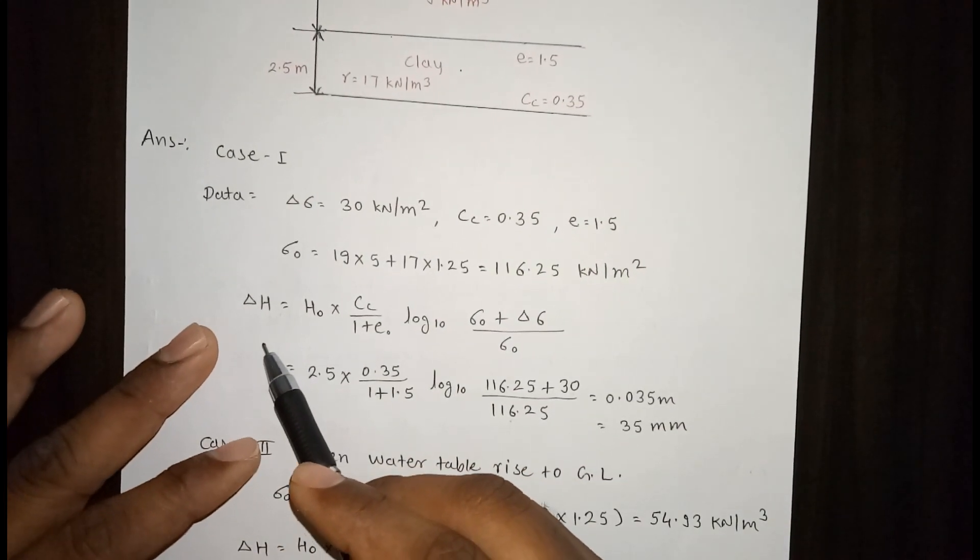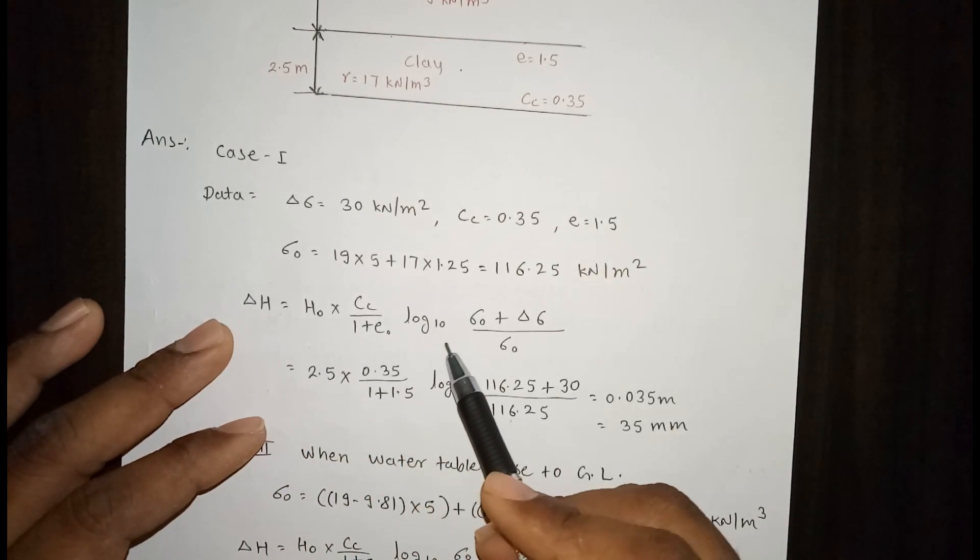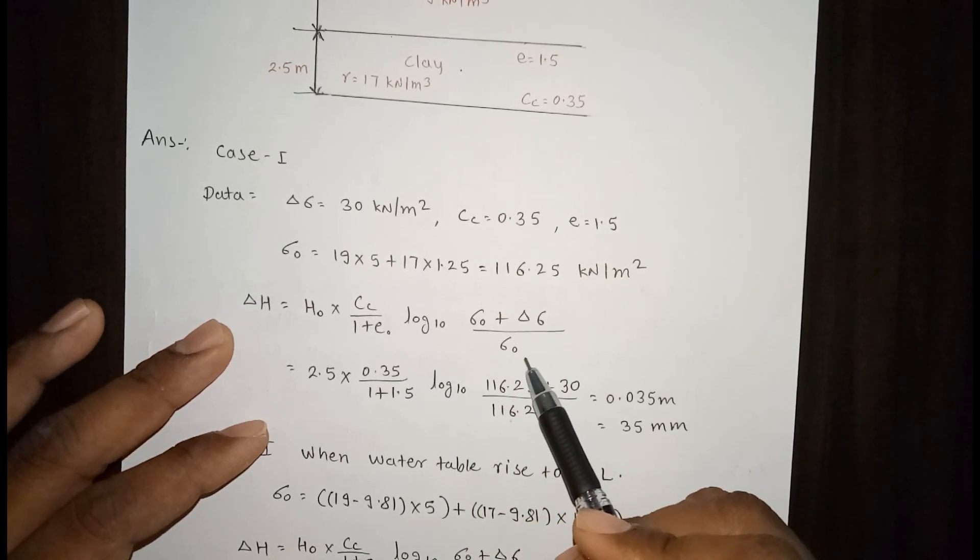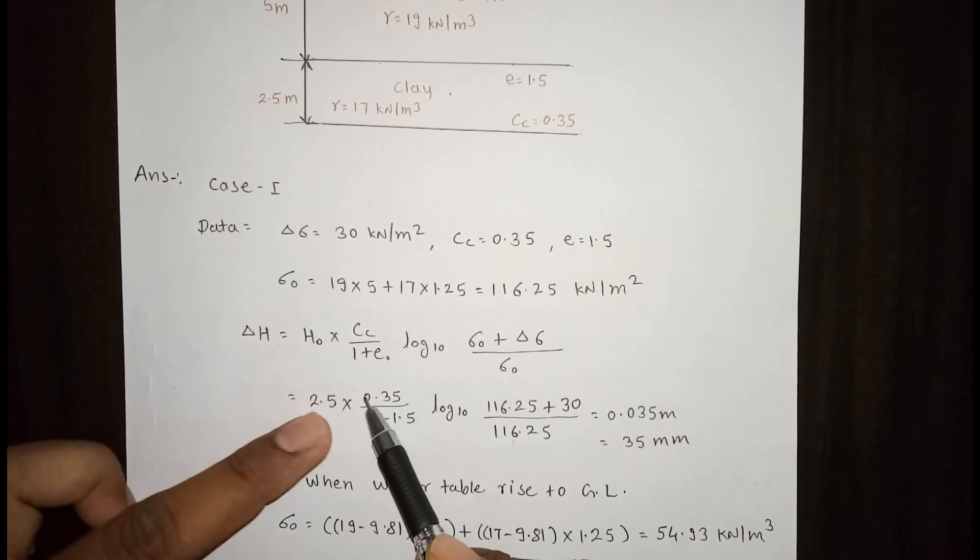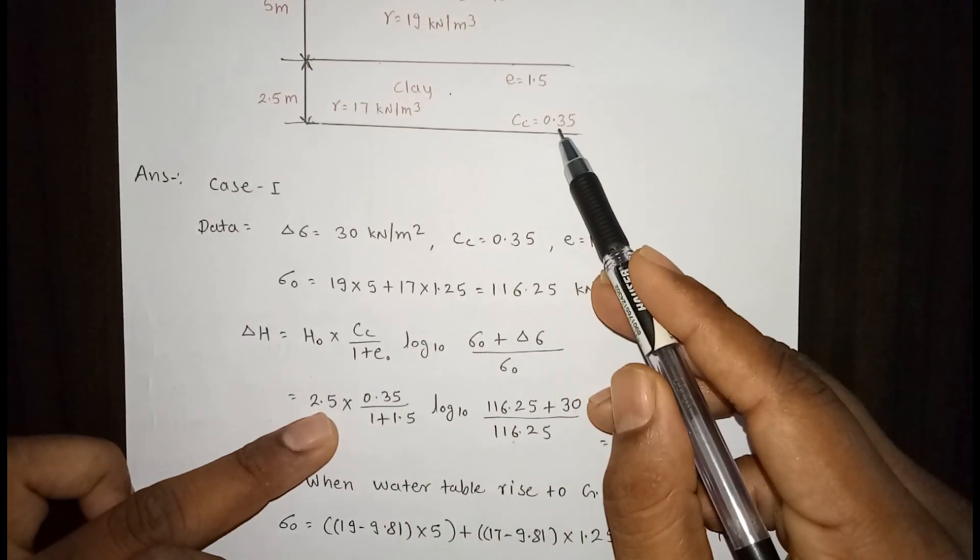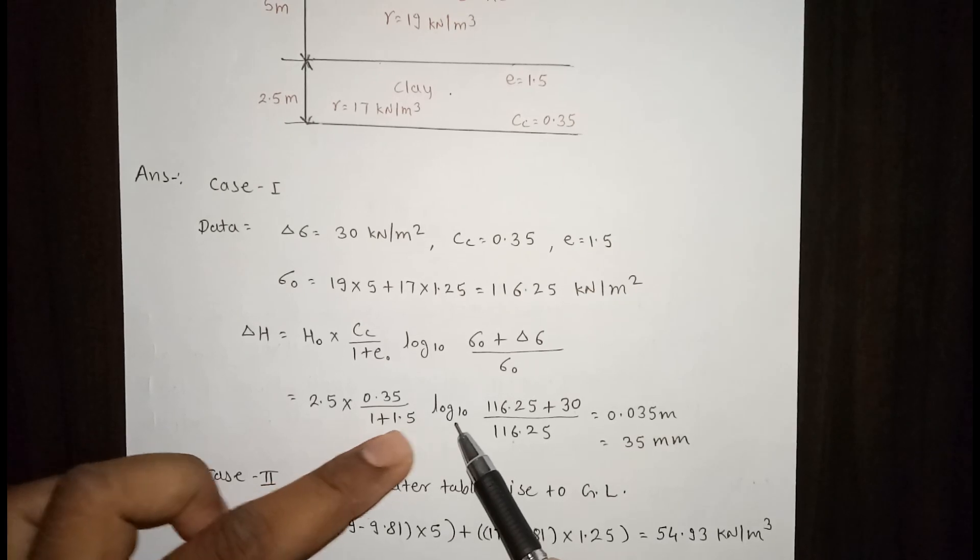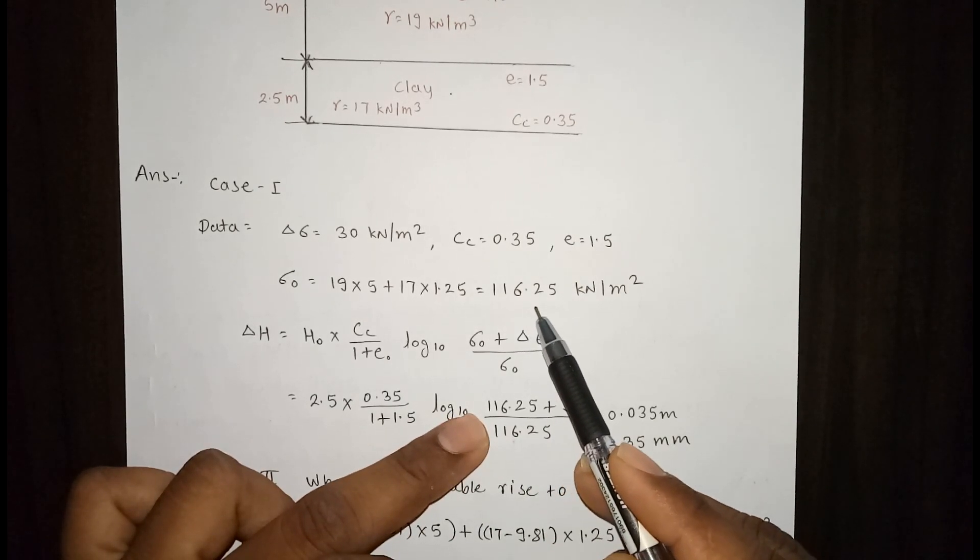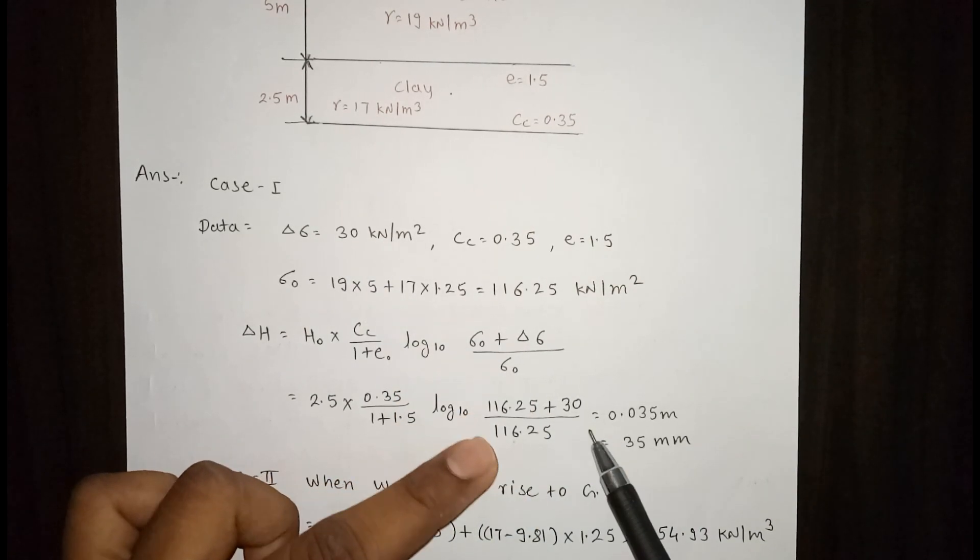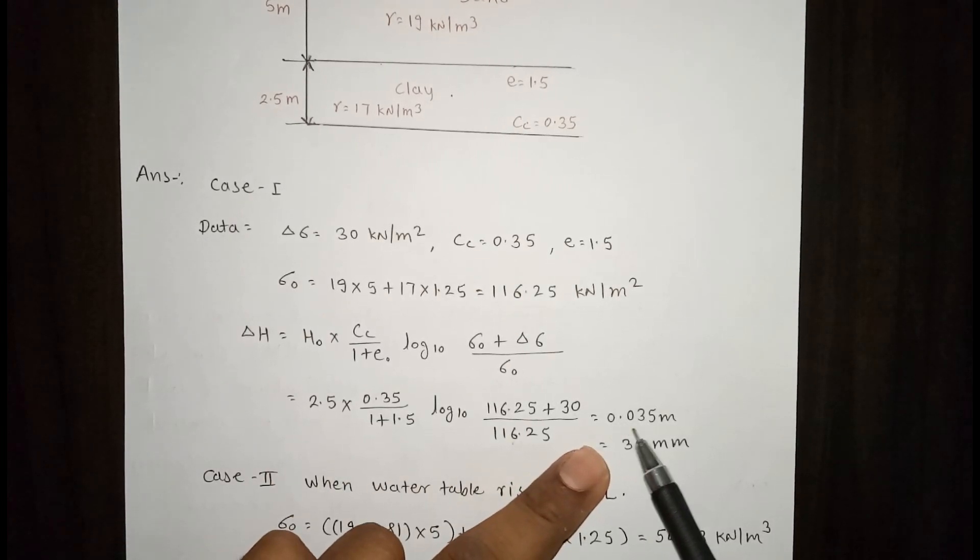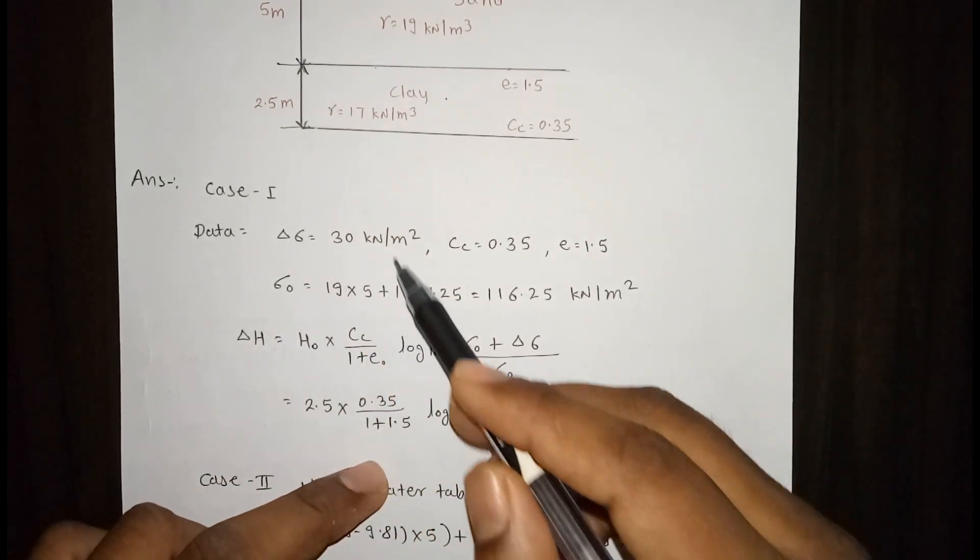We know that the settlement of the clay layer is delta h equals h0 times cc divided by (1 plus e) times log10 of (sigma 0 plus delta sigma) divided by sigma 0. Height of the clay layer is 2.5, cc is 0.35, e is 1.5, sigma 0 is 116.25, delta sigma is 30. With this formula, we have calculated the settlement is 0.035 meters, that means 35 mm. This is the first case.